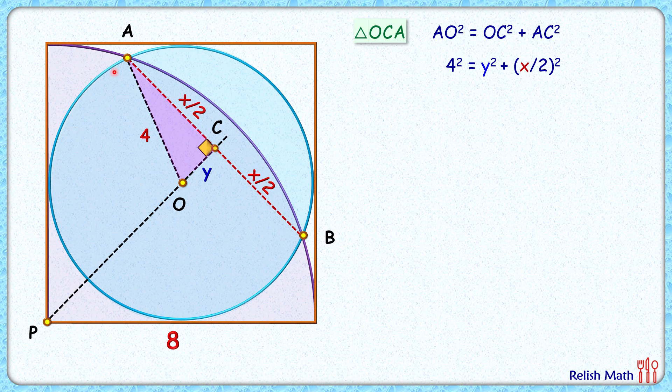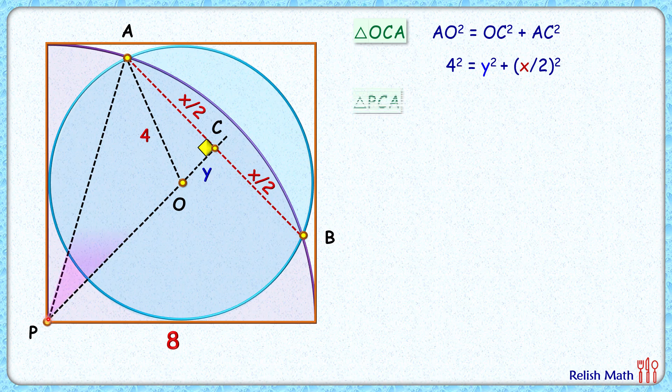For that let's join this length AP here. Now in this right angle triangle PCA, applying Pythagoras theorem we will get PA² = PC² + AC². Now for the length PA, PA is the radius of this blue quadrant and radius of the blue quadrant is same as the side length of the square. So PA length is 8 cm.